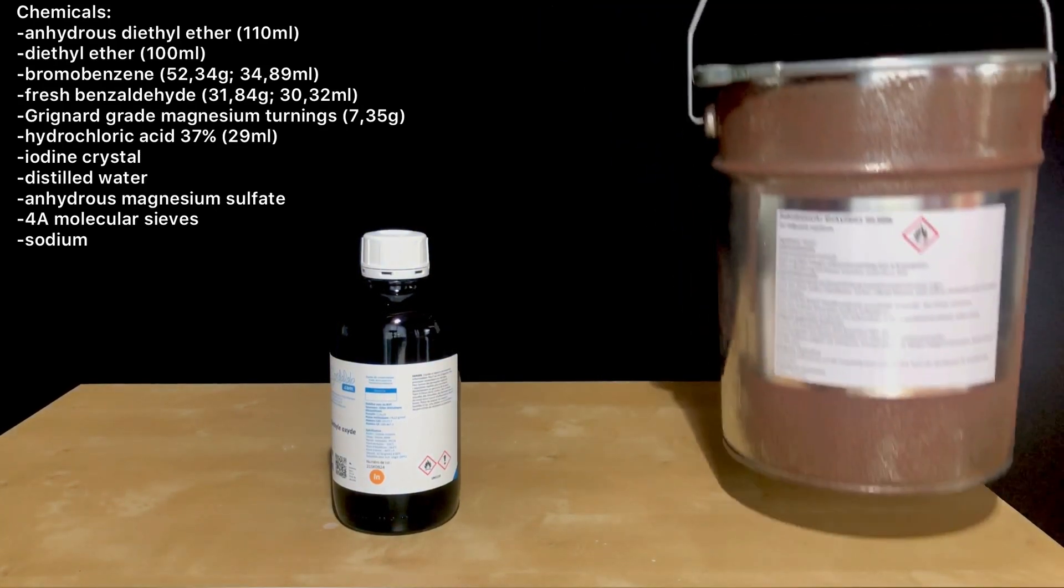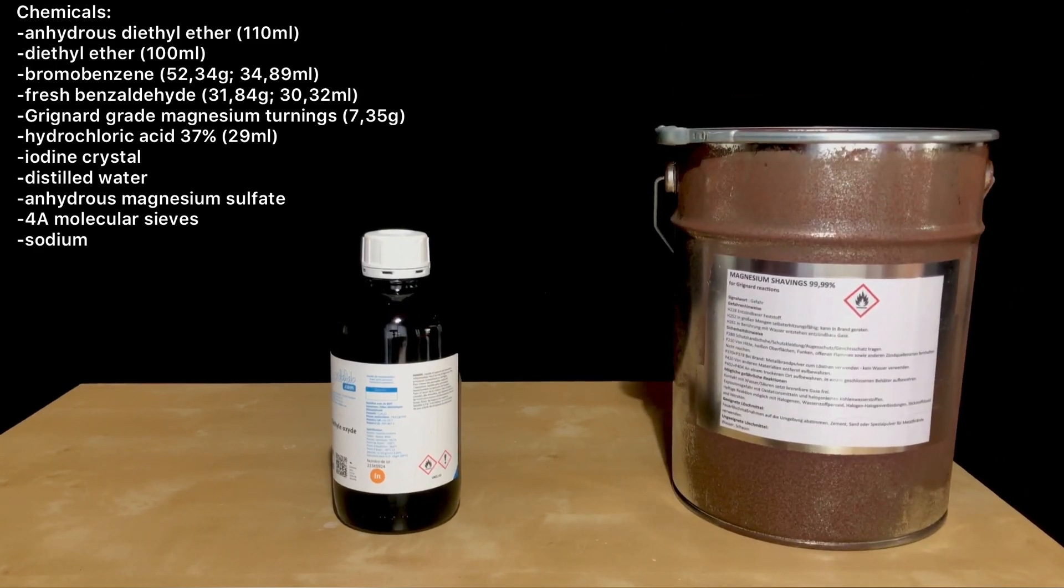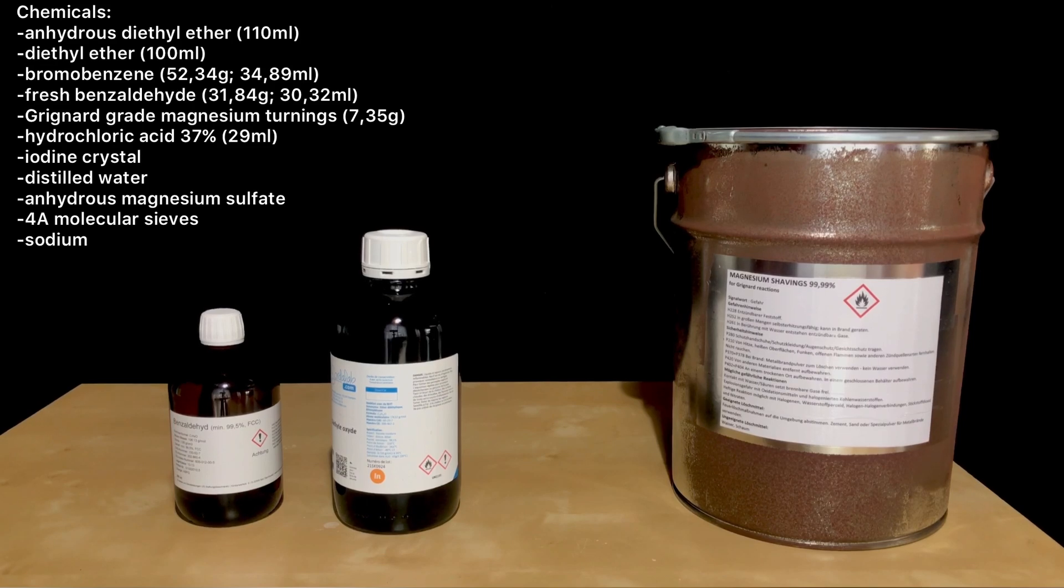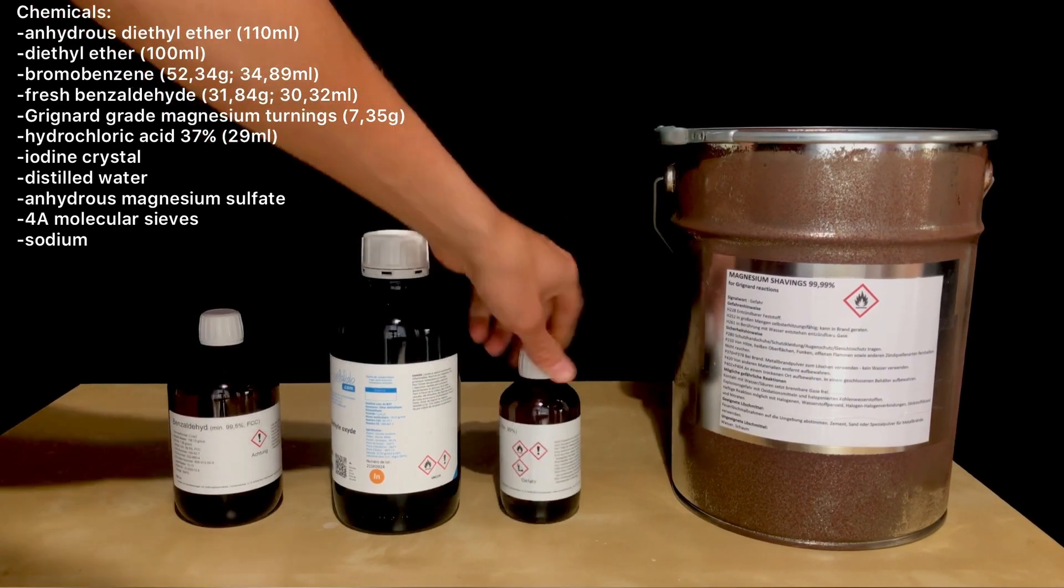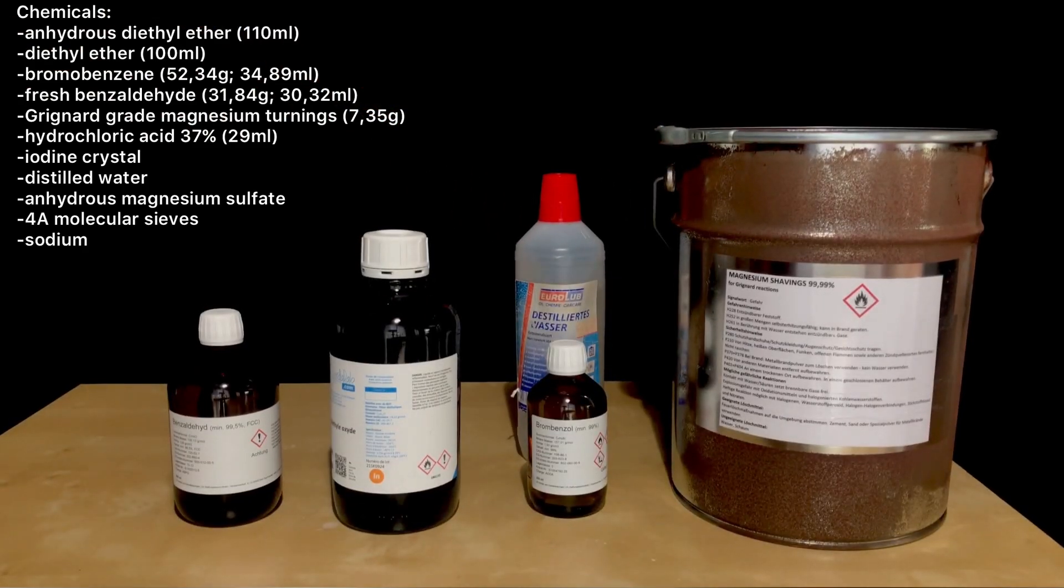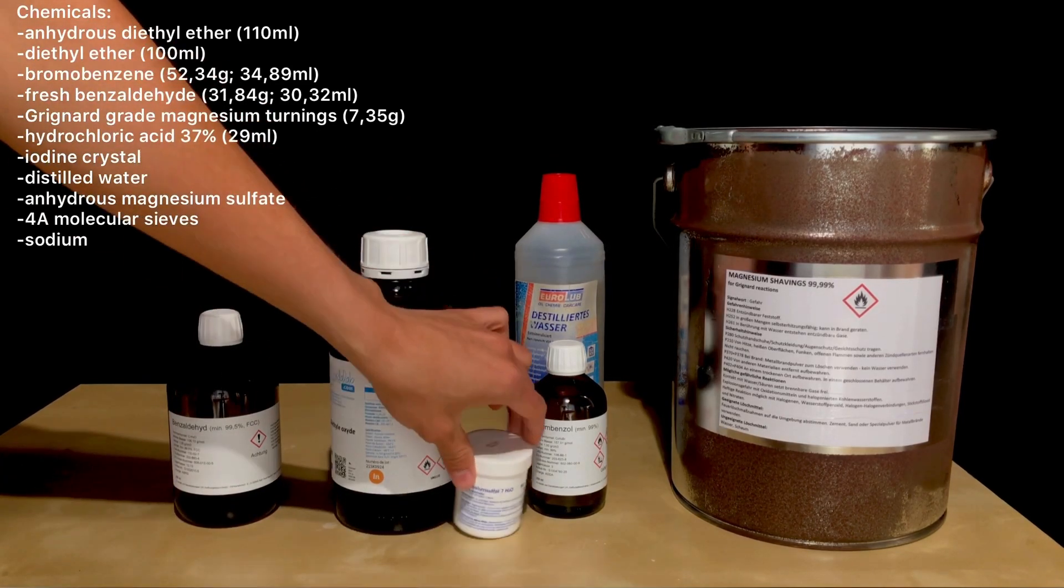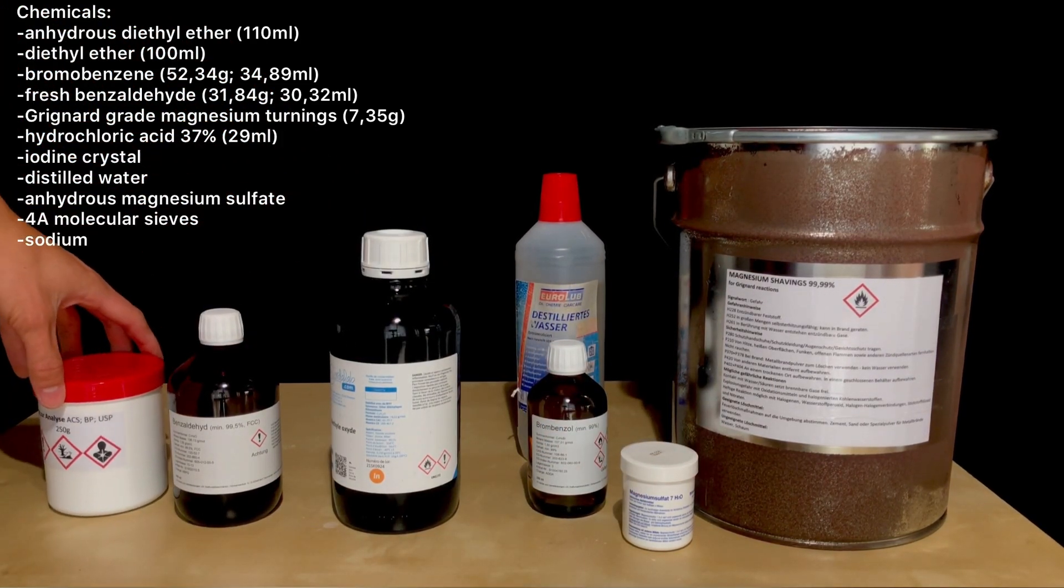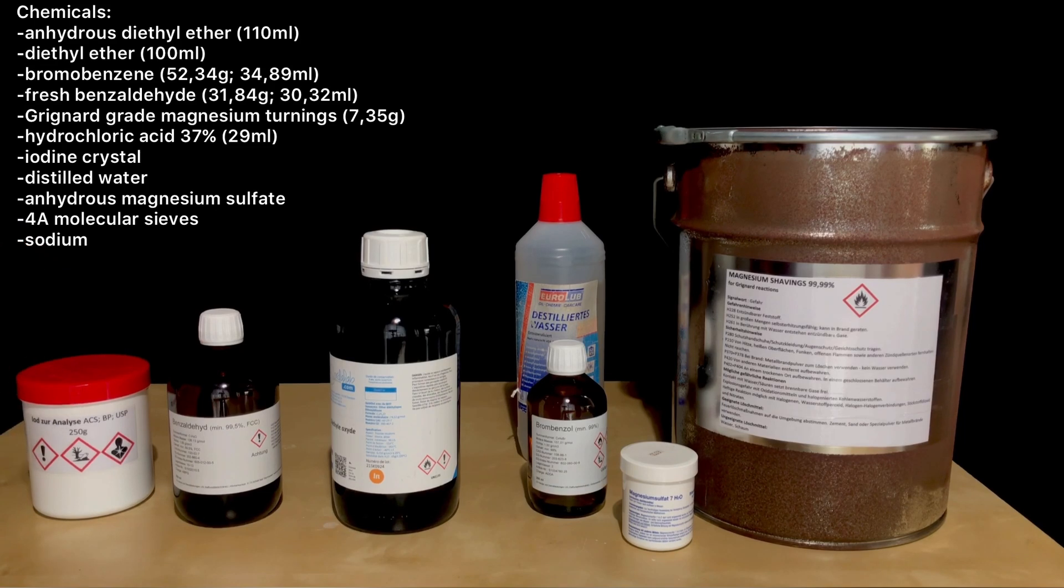For today's preparation, a lot of chemicals are needed. Firstly, 110 milliliters of anhydrous diethyl ether and 100 milliliters of normal diethyl ether for the extraction will be needed. Besides that, 30.3 milliliters of fresh benzaldehyde, 34.9 milliliters of bromobenzene, 7.35 grams of Grignard grade magnesium turnings, an iodine crystal, 37% hydrochloric acid (29 milliliters of this), distilled water and 10 grams anhydrous magnesium sulfate will be needed.